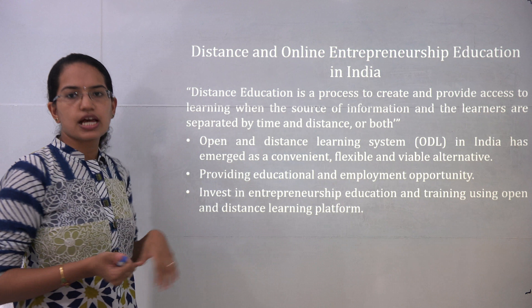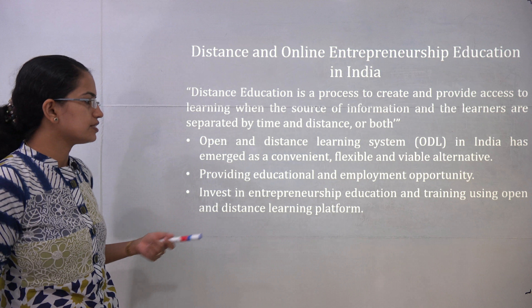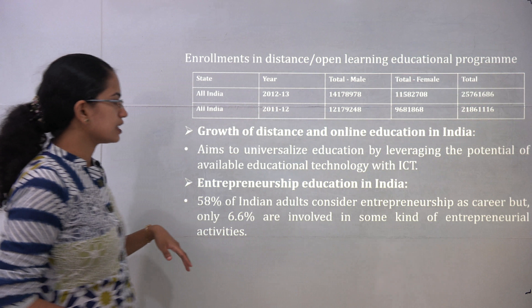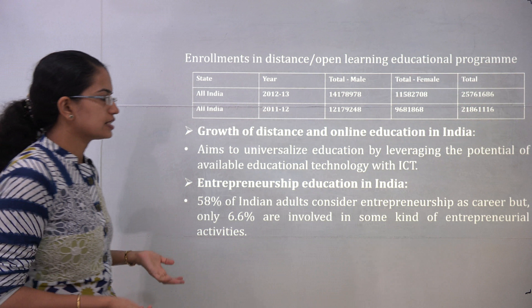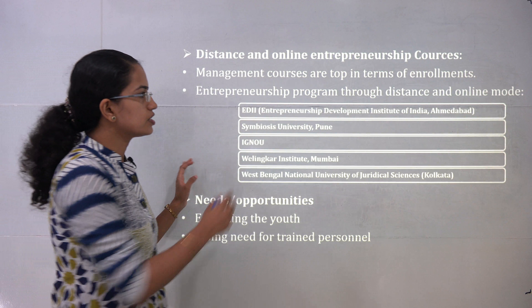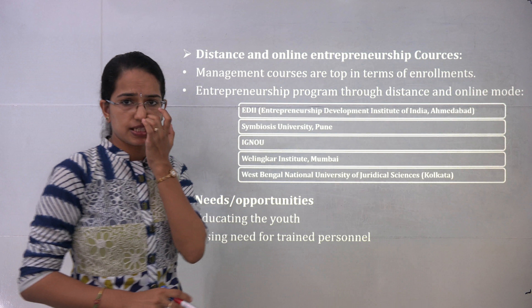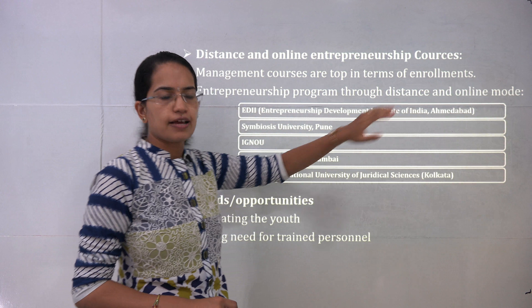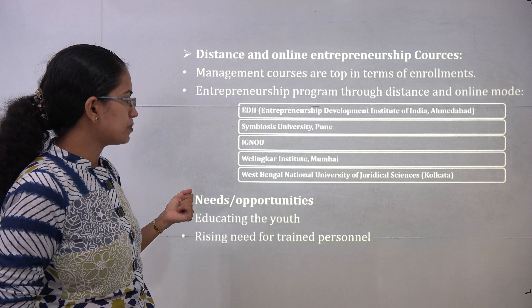The open and distance learning system has emerged as a convenient and flexible alternative to the normal education system, helping to provide more employment opportunities. Entrepreneurship programs have been released by different universities, most importantly the EDII — Entrepreneurship Development Institute of India in Ahmedabad — along with Symbiosis University Pune, IGNOU programs, Whistling Woods Mumbai, and West Bengal National University for Judicial Sciences in Kolkata.